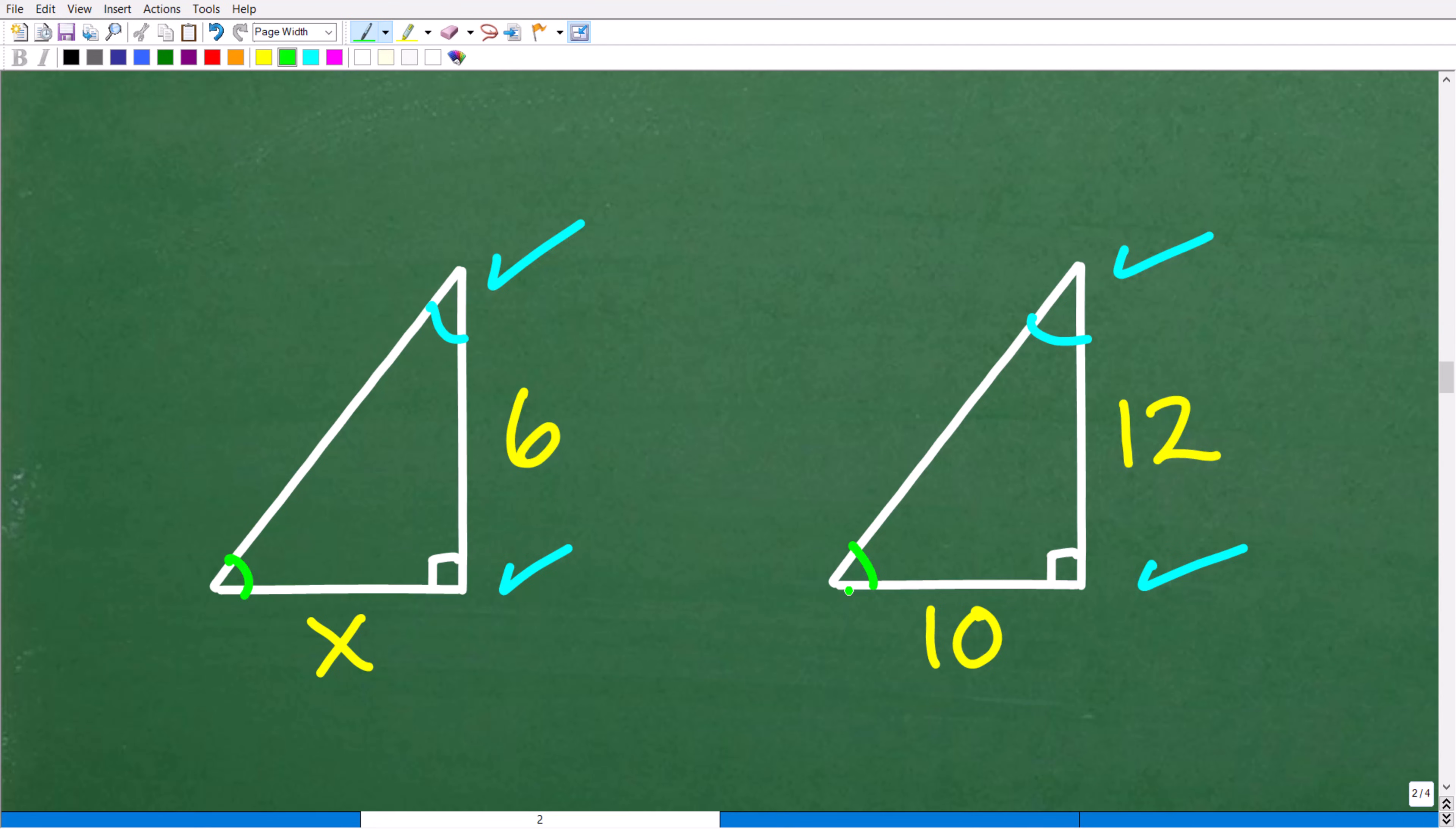this angle right here is the same. So these triangles have the exact same angles. That means that they have the exact same shape, i.e. they are similar. All right, so we're very happy to know that. Again, we can prove that by using the angle-angle theorem.